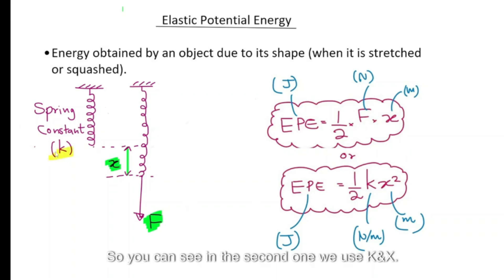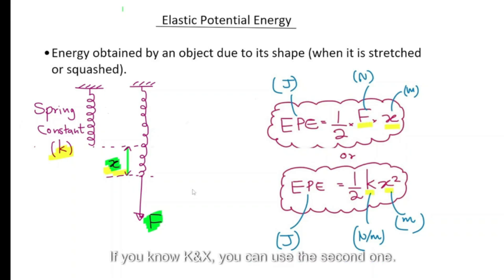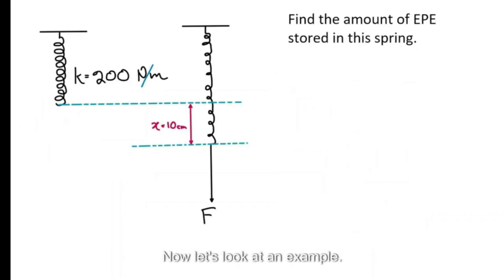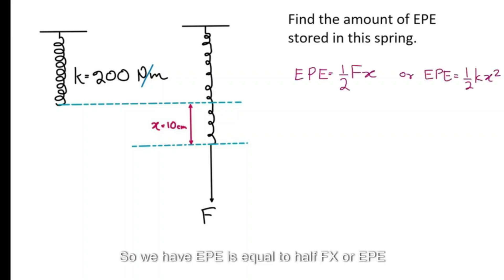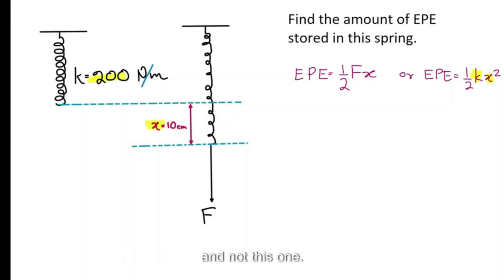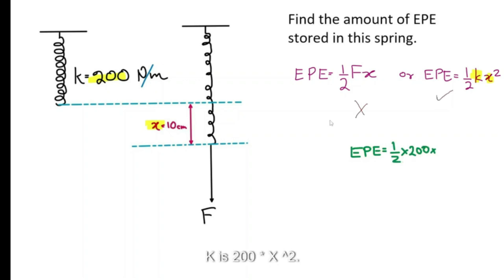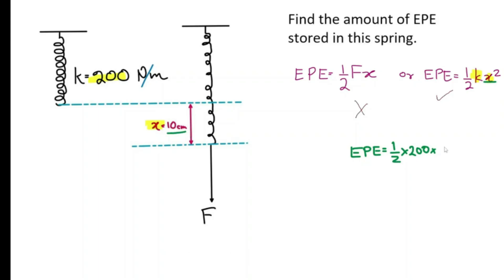There is another variation: EPE = ½kx². If you know f and x, use the first formula; if you know k and x, use the second. For example, a spring of spring constant 200 N/m extends by 10 cm: EPE = ½ × 200 × (0.1)² = 1 joule. Remember to convert centimeters to meters by dividing by 100.